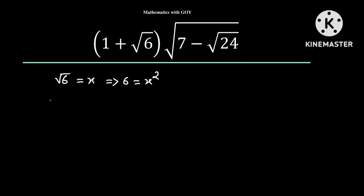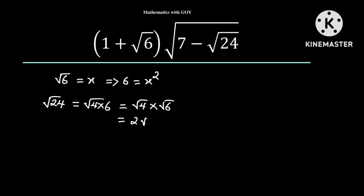Now we know that the square root of 24 is equal to the square root of 4 times 6. And this is equal to the square root of 4 times the square root of 6. But we know the square root of 4 is 2, so this is equal to 2 root 6. And since the square root of 6 is equal to x, we can write this as 2x.